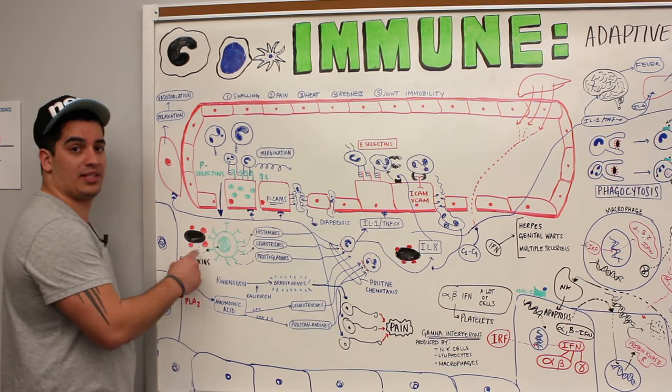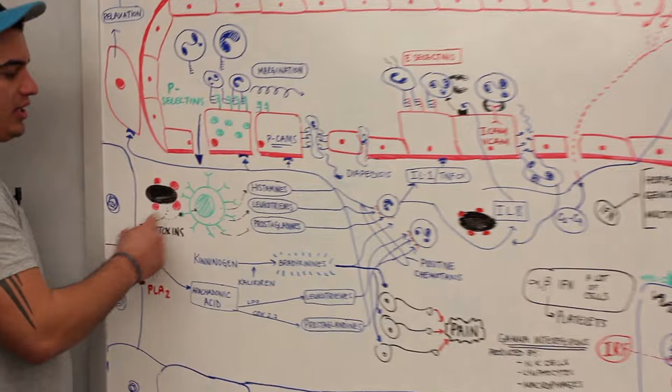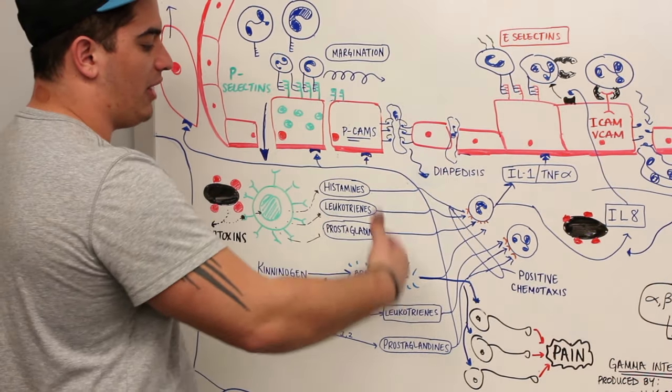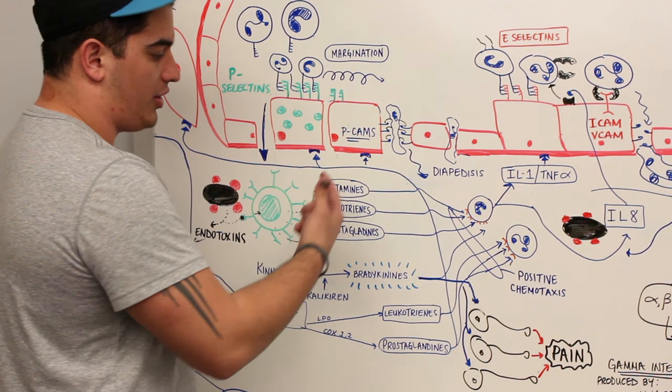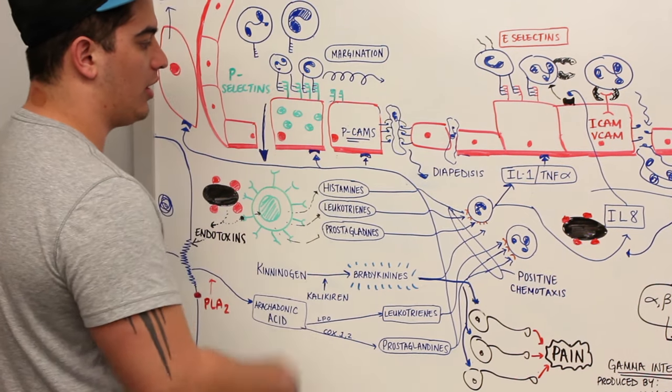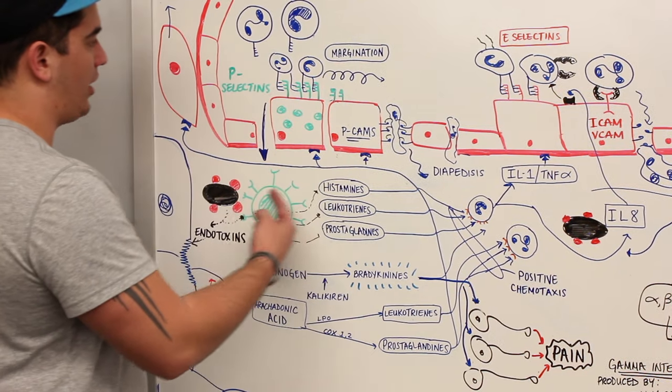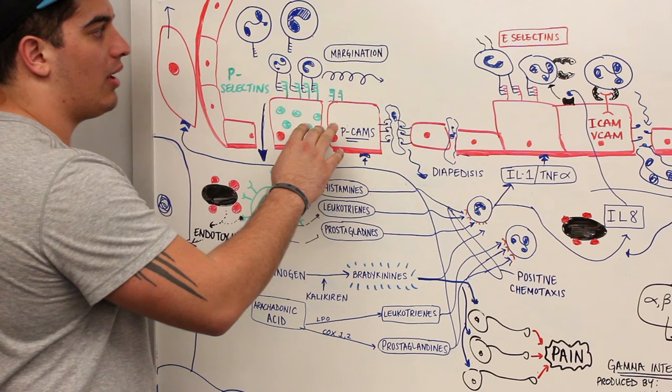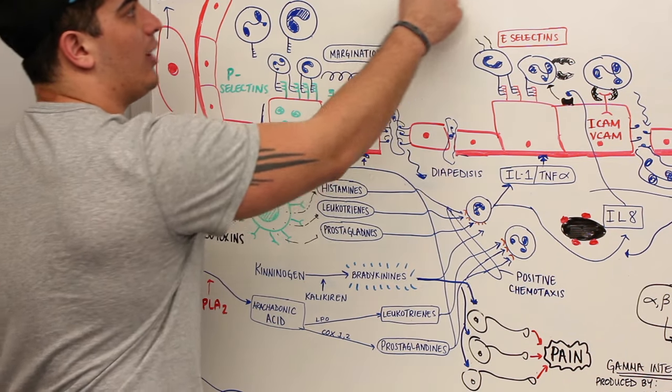There was some type of damage from this bacterial cell that caused the release of endotoxins, which caused a massive release of inflammatory cytokines like the ones we've already talked about. These act on smooth muscle cells and cause vasodilation, which increases blood flow and causes heat and redness.